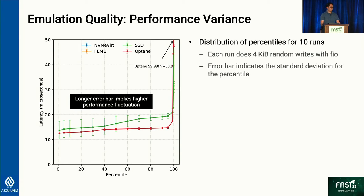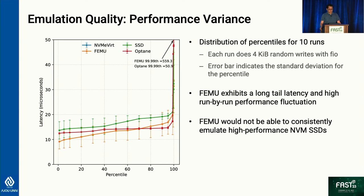We first show the emulation quality of NVMe BERT. This graph shows the distribution of percentile latency for 10 random write runs. The error bars indicate standard deviation for each percentile, so longer bars indicate higher performance variation. From the real devices, the NVMe SSD outperforms the conventional SSD as expected, with slightly higher variation for the conventional SSD. We also measured performance variation from the widely-used FEMU emulator — FEMU shows very long tail latency and high run-by-run performance fluctuation, suggesting it cannot consistently emulate high-performing NVMe SSDs.